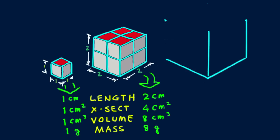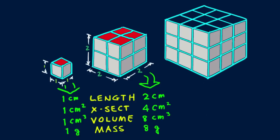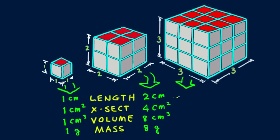Now let's look at a cube scaled up to three times the linear dimensions — a three by three by three cube. Its cross-sectional area is three times three, or nine square centimeters, colored red. We label its length, cross-section, volume, and mass.